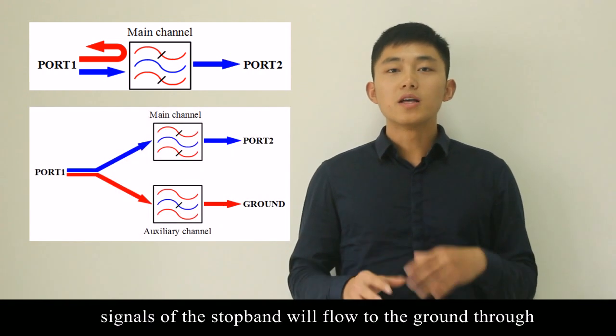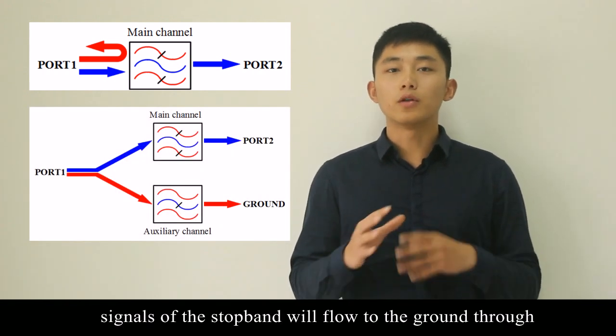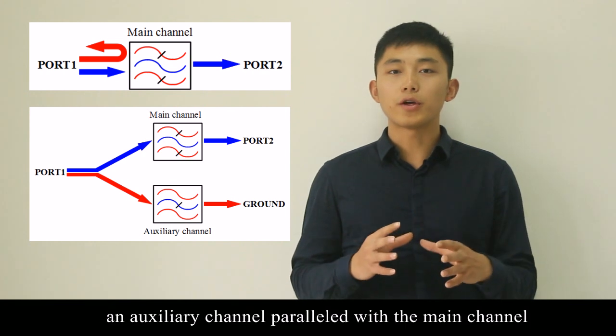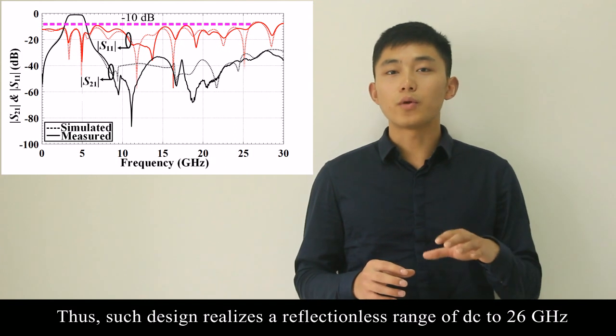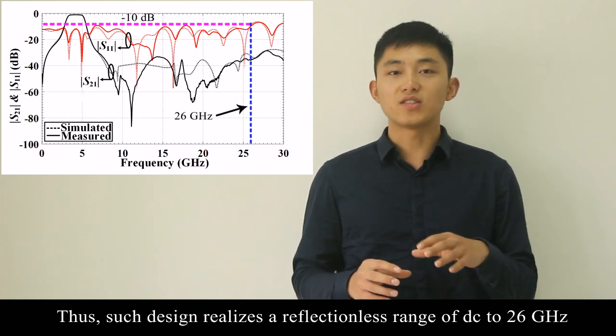In the proposed filter, signals of the stopband will flow to the ground through an auxiliary channel paralleled with the main channel. Thus, such design realizes a reflectionless range of DC to 26 GHz.